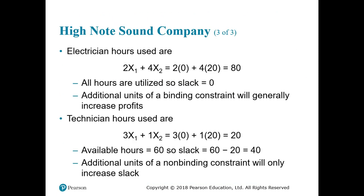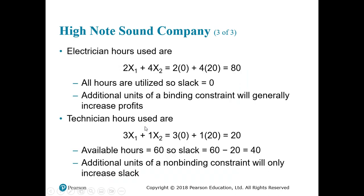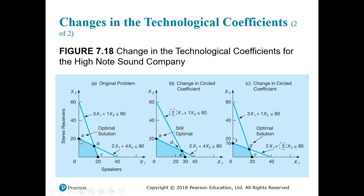The next part looks at the left-hand side of the constraint — the technological coefficients. You have 2x1 + 4x2 for electrician hours and 3x1 + 1x2 for audio technician hours. For example, it currently takes 2 hours of electrician time to produce one unit of x1. The question is: if we change that coefficient, will the optimal solution still be optimal? We need to compare against the current optimum.